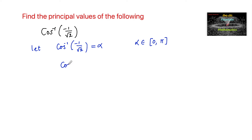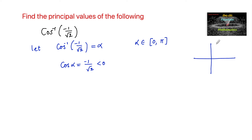So we can write cos alpha is equal to minus 1 upon root 2, which is less than 0. We know that in 0 to pi — that is the first quadrant and second quadrant — cos is positive in the first quadrant and cos is negative in the second quadrant.